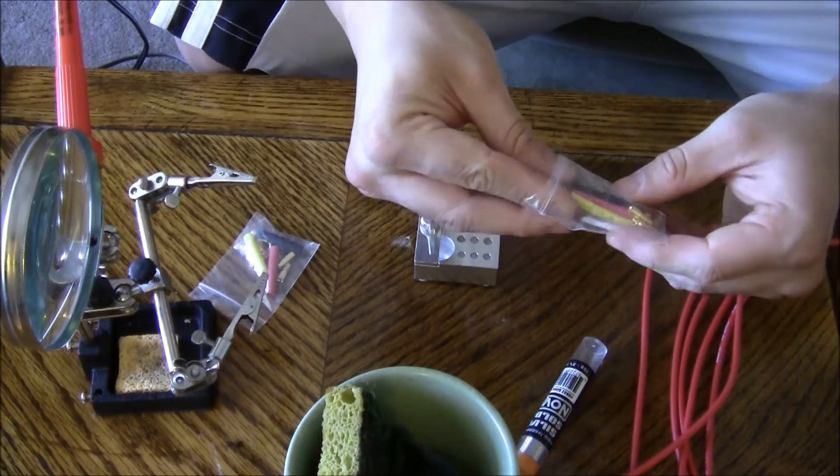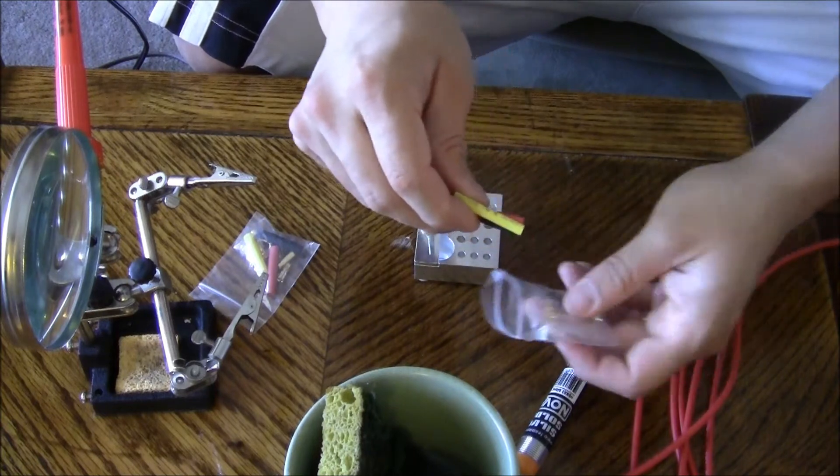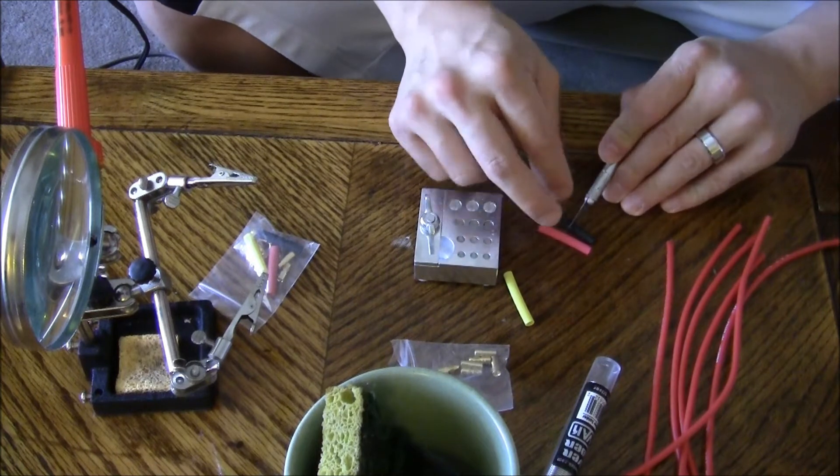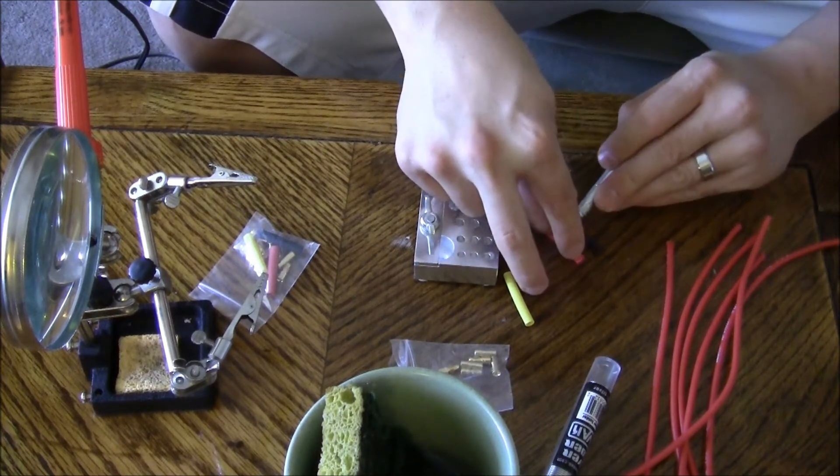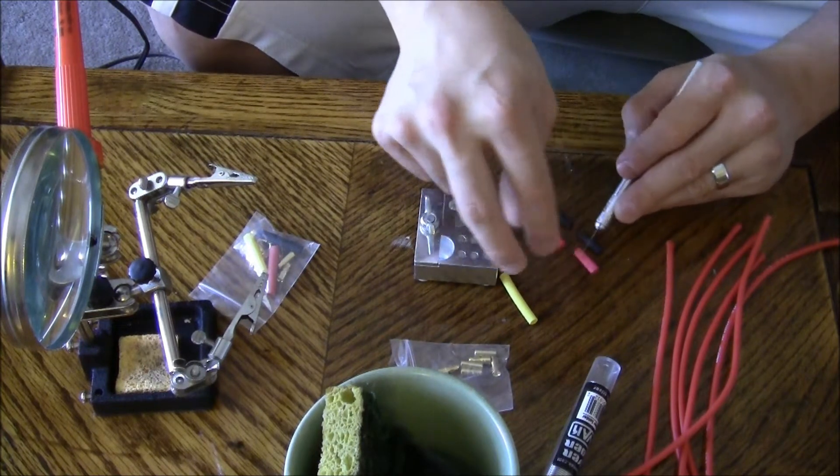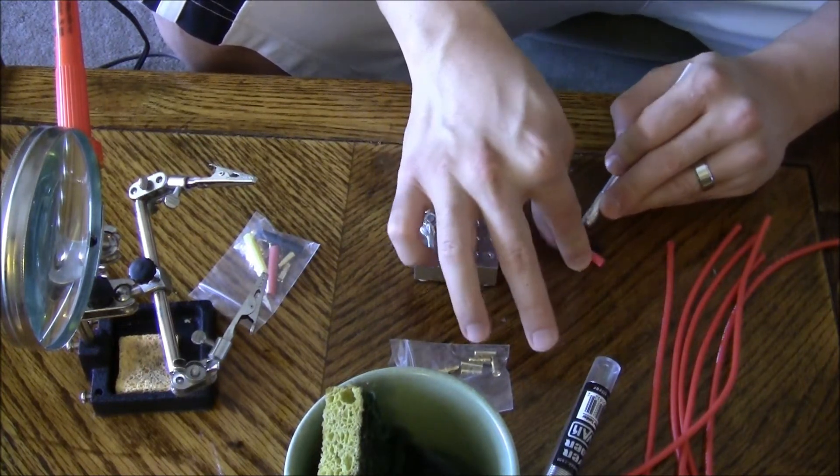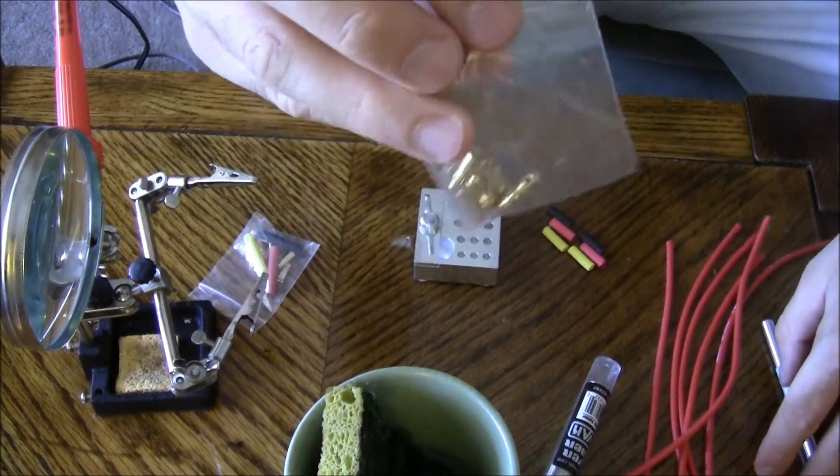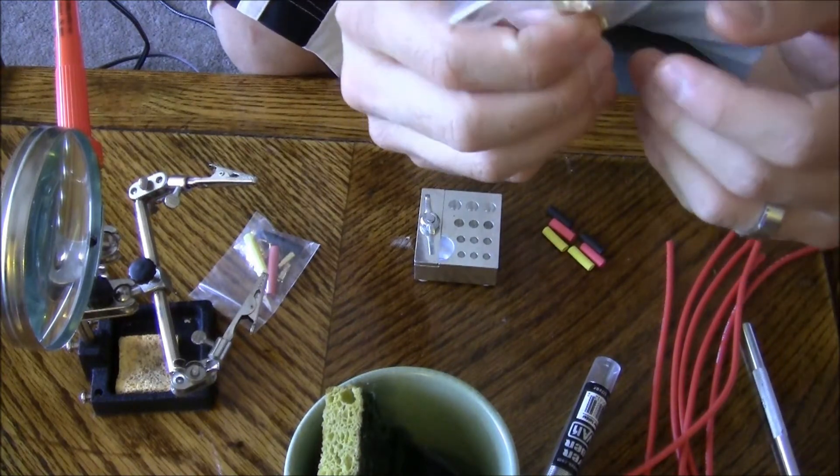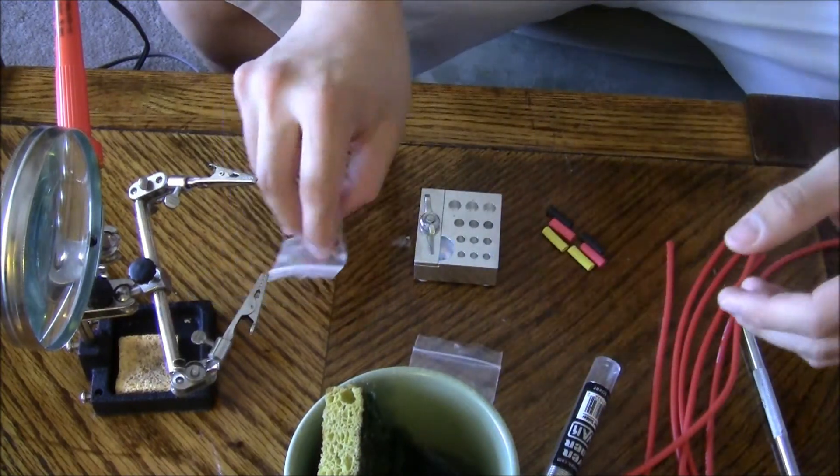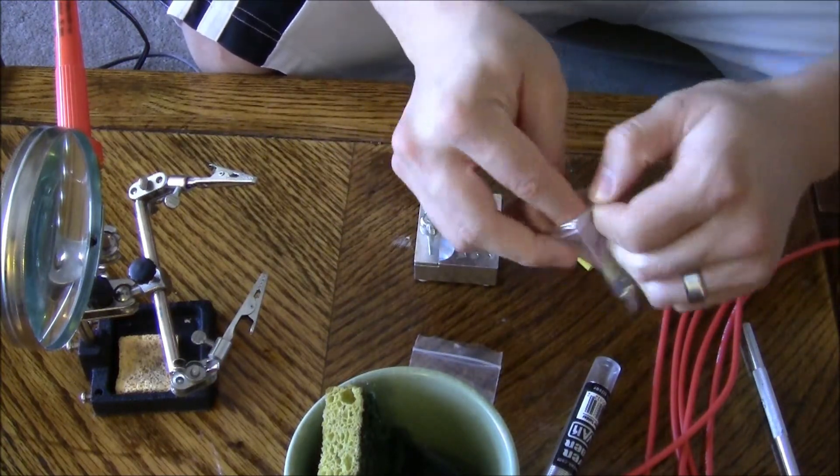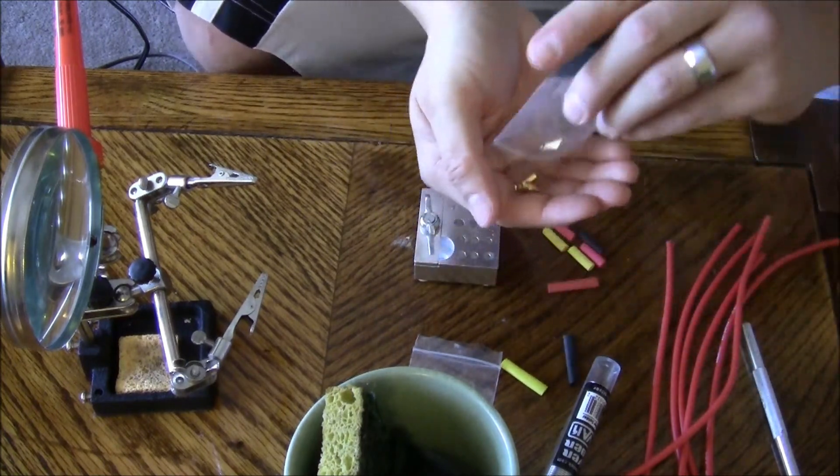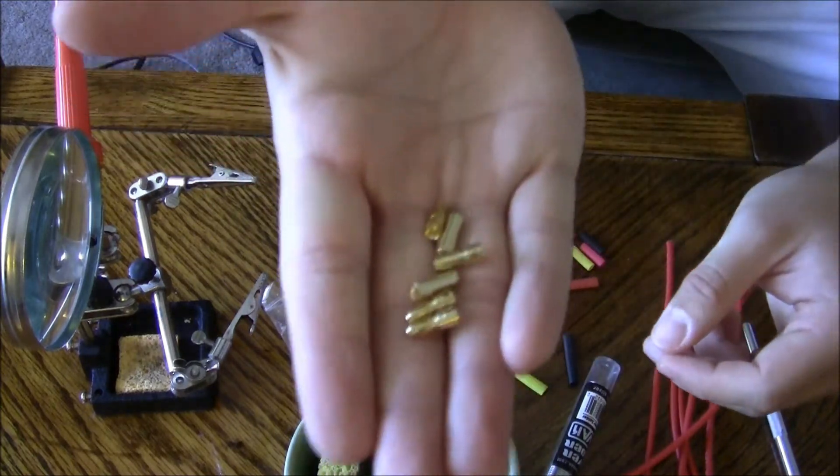It's always a good idea to save these connectors. If you buy a new motor online, usually they'll come with a pack of these extra bullet connectors in case you don't have bullet connectors installed on your ESC. It's always a good idea to save them just in case. Right now is a perfect example of the time that you would need them.